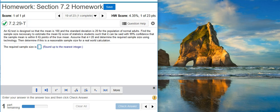Here's our problem statement. An IQ test is designed so that the mean is 100 and the standard deviation is 20 for a population of normal adults. Find the sample size necessary to estimate the mean IQ scores of statistics students such that it